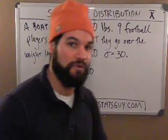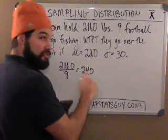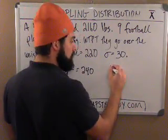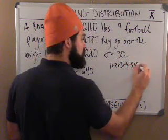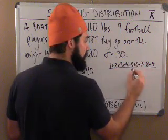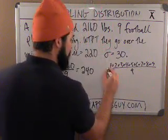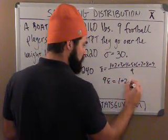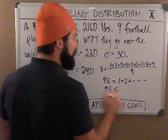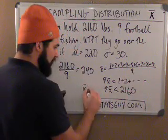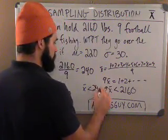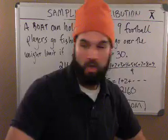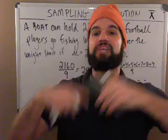Think about this: if the average of them is more than 240, that means they're going to go over the limit. Think about how you find the average — you take all the players: player one plus player two plus player three plus player four plus player five plus player six plus player seven plus player eight plus player nine, add them all up, and divide by nine. If I multiply both sides by nine, nine times x-bar will be the sum of all their weights. We know that nine times x-bar has to be less than 2,160, which means x-bar must be less than 240. So it's an x-bar problem.